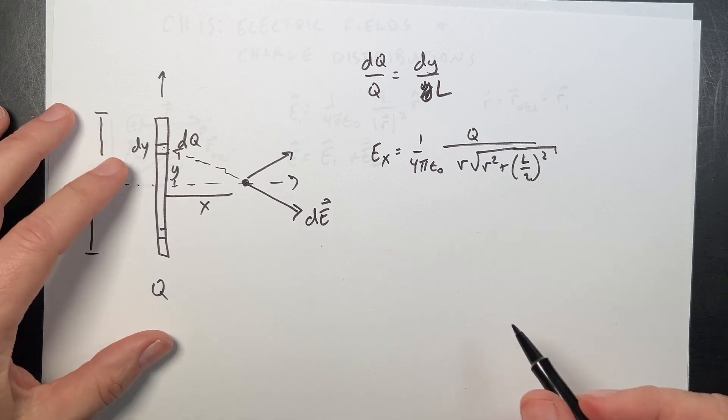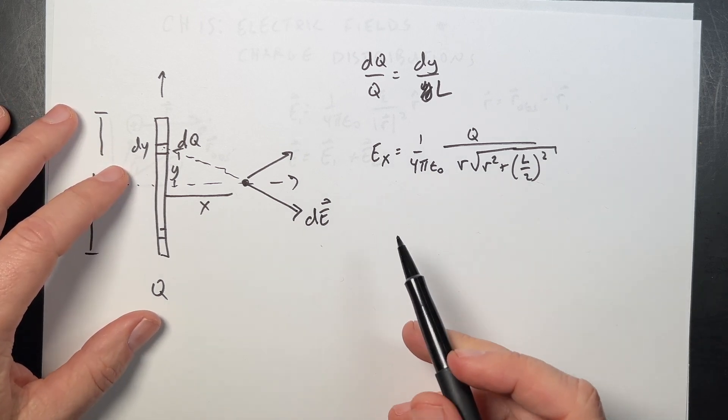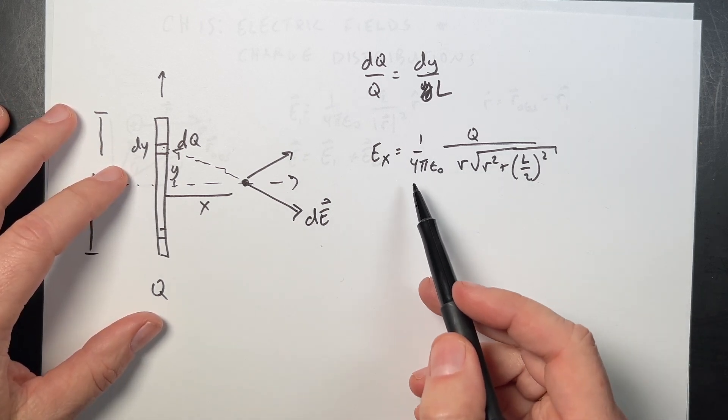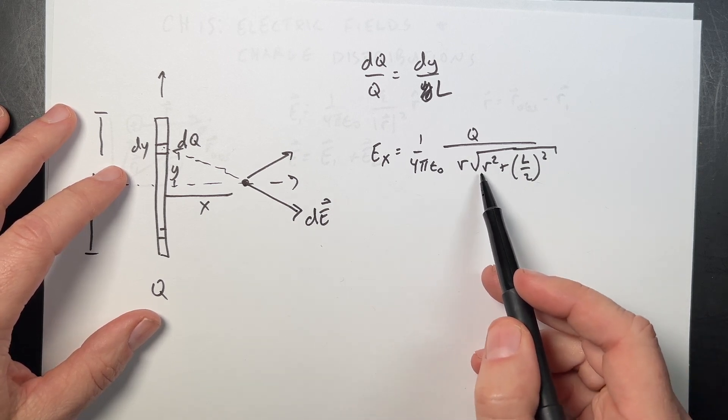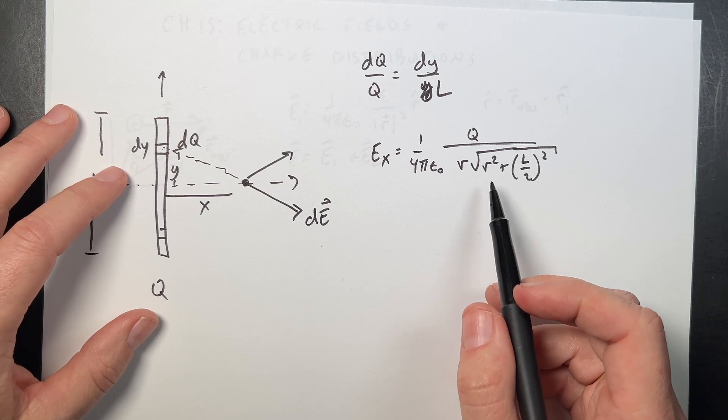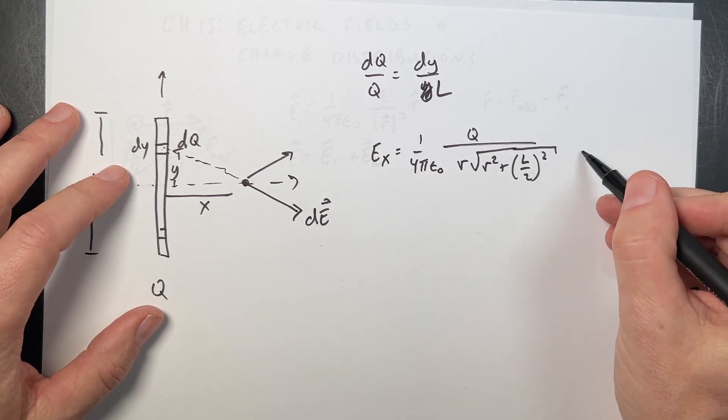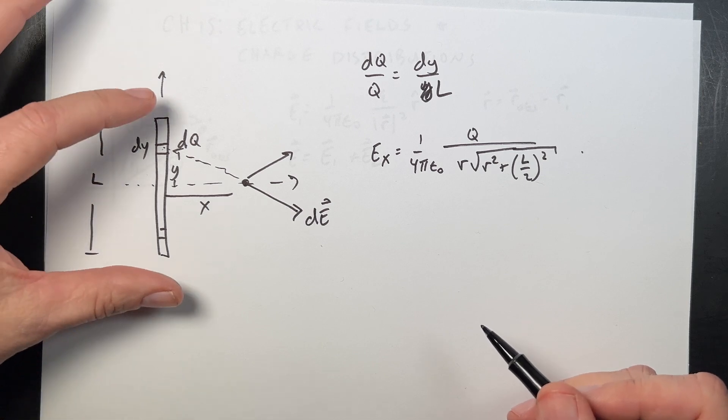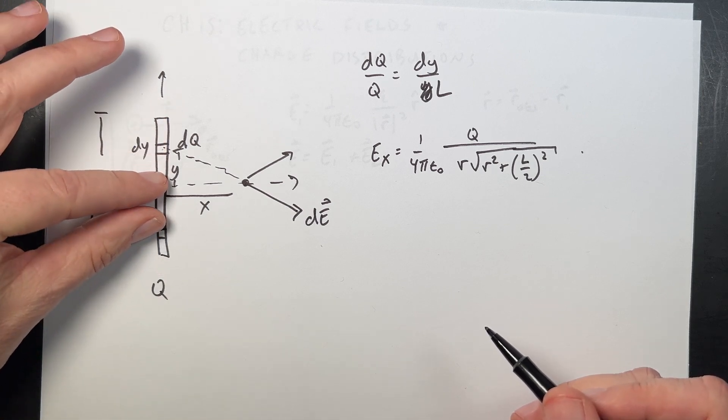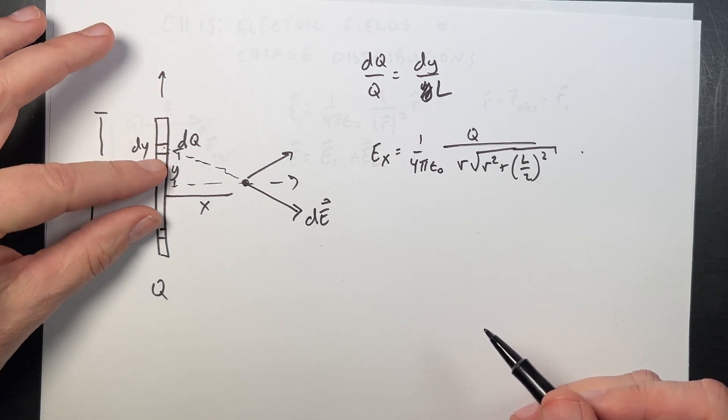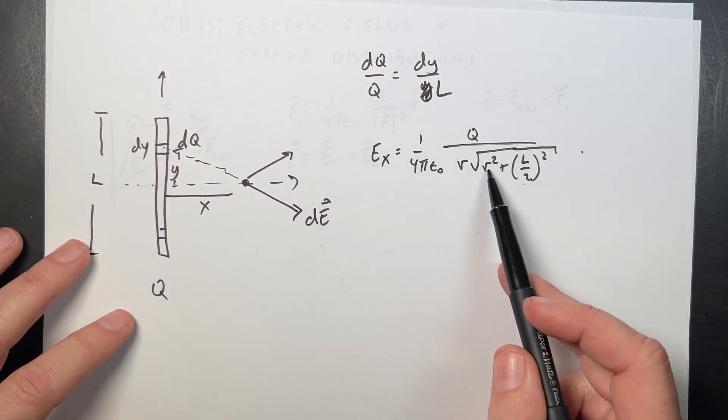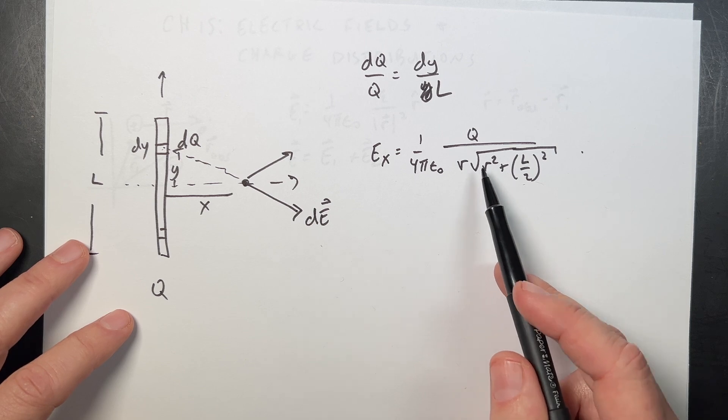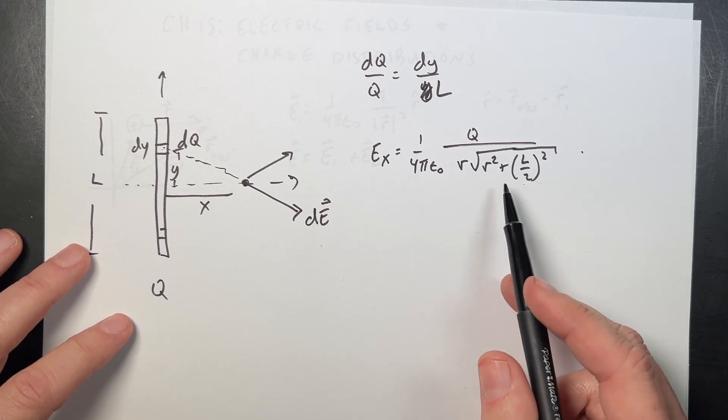Now, you should be able to check things. Does it have the right units? This is 1 over 4 pi epsilon naught charge over R times R, which is distance squared. That has the same units as a point charge. So that's a good thing. What happens as L gets really small? As L gets really small, this should look like a point charge. So as L gets really small, I just get R times R and I get R squared. It does go to the equation for electric field due to point charge.